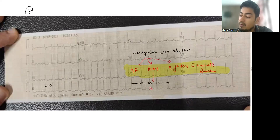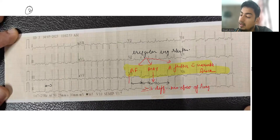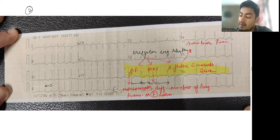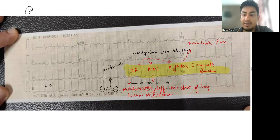MAT will have three or more different morphologies of P waves. AF will have no appreciable P waves or fibrillatory waves. Atrial flutter will have sawtooth P waves. In this ECG, the P waves are not appreciable, so this is an ECG of atrial fibrillation.